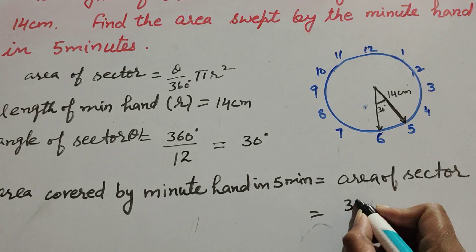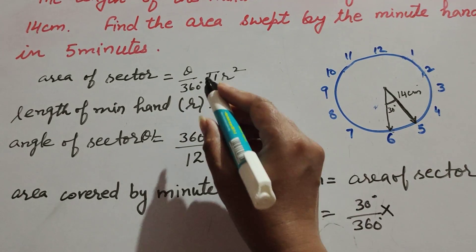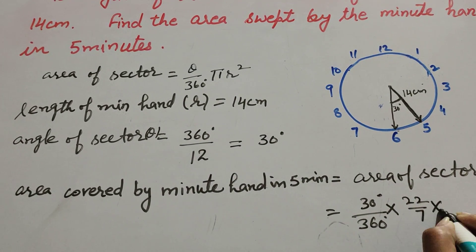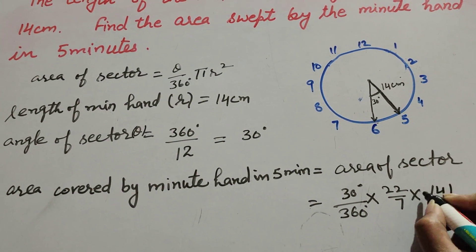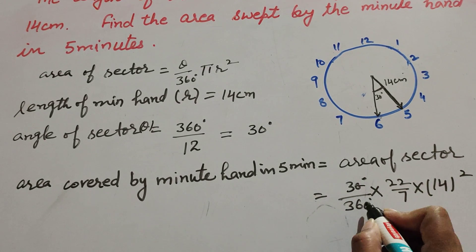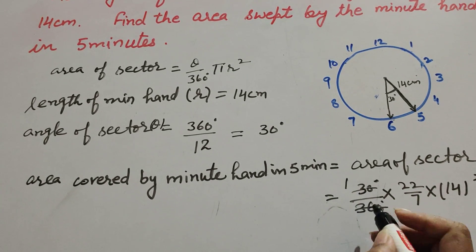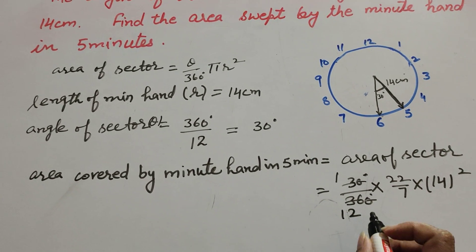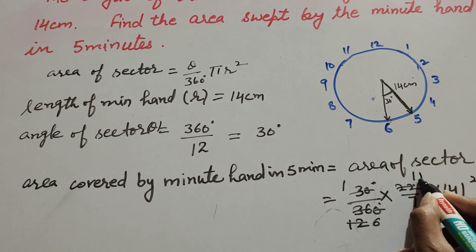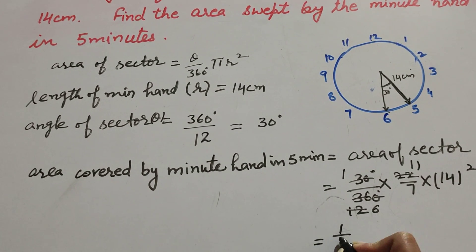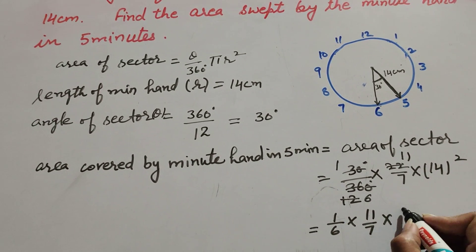We have 30 over 360, multiplied by pi — its value is 22 over 7 — multiplied by r squared, where r is 14 centimeters, so it is 14 squared. Now, the zeros in numerator and denominator cancel. Then 3 and 36 are both divisible by 3, so we cancel them: 3 ones are 3, 12 threes are 36, giving 12. Then 22 and 12 are both divisible by 2: 2 sixes are 12, 11 twos are 22. So we get 1 over 6 multiplied by 11 over 7 multiplied by 14 squared.